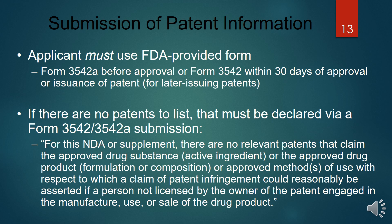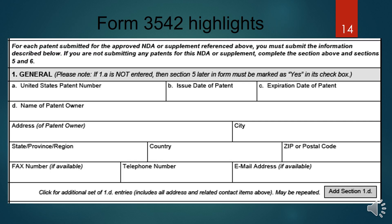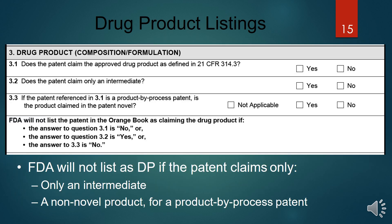To submit patent information, the applicant must use the FDA-provided form — Form 3542a before approval, or Form 3542 within 30 days of approval. The form captures the patent number, name of the patent holder, issue date, expiration date, and address. This constitutes the patent listing data in the Orange Book.